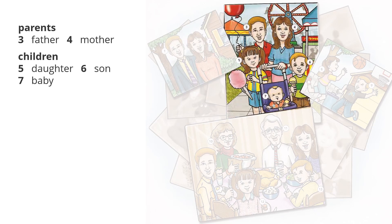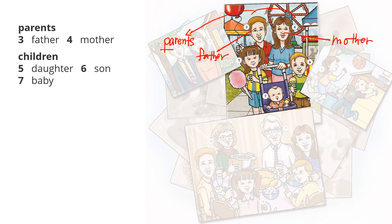In this picture you see a family, and these two are parents — P-A-R-E-N-T-S. He is father and she is mother. Father and mother — they are parents. And there are three children — C-H-I-L-D-R-E-N.